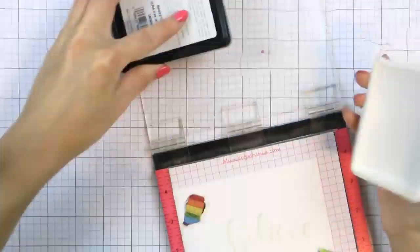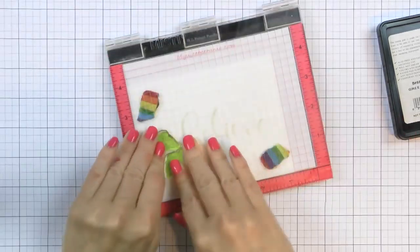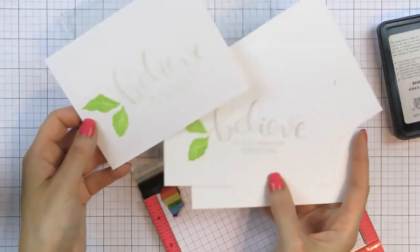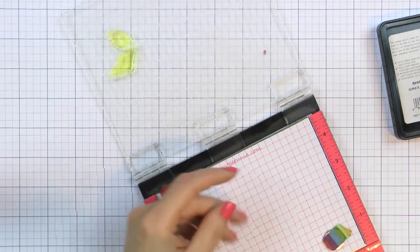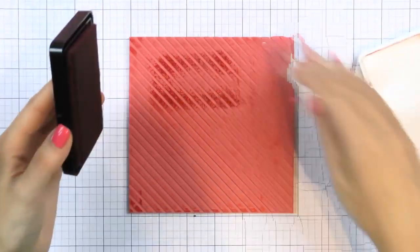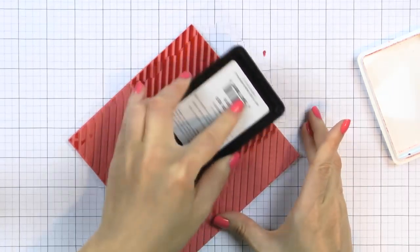By using my mini MISTI I can be sure I am stamping those in the same spot and I don't have to spend time aligning the images, so my stamping process goes rather quickly. At this point my sentiment panels are done and I can set them aside and work on my background panels.